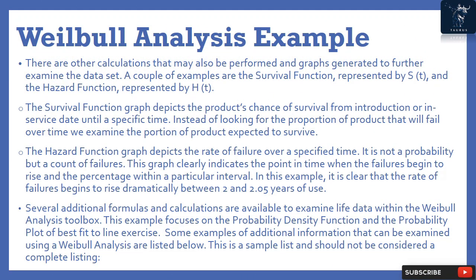There are other calculations that may also be performed and graphs generated to further examine the data set. Two examples are the survival function S(T) and the hazard function H(T). The survival function graph depicts the product's chance of survival from introduction or in-service date until a specific time — examining the portion of product expected to survive. The hazard function graph depicts the rate of failure over a specified time; it is not a probability but a count of failures.